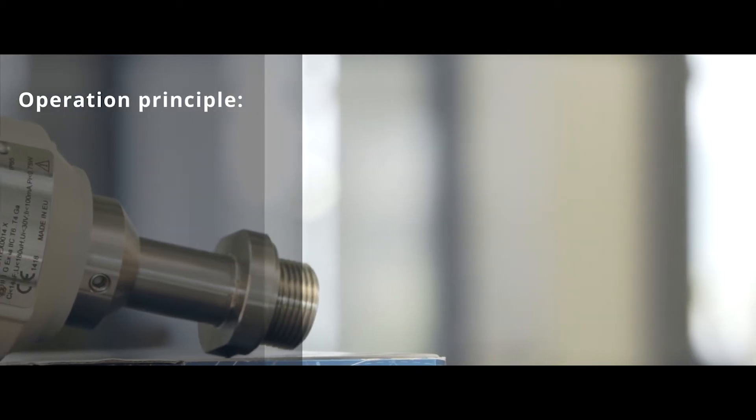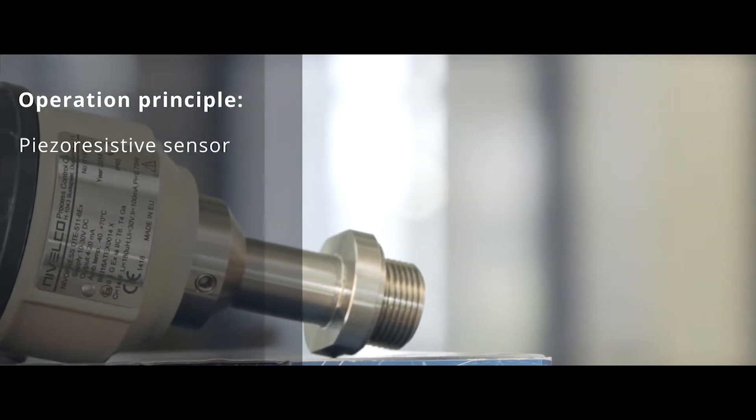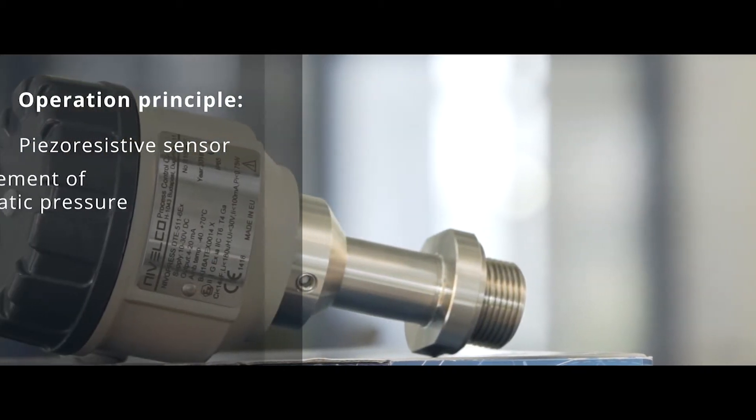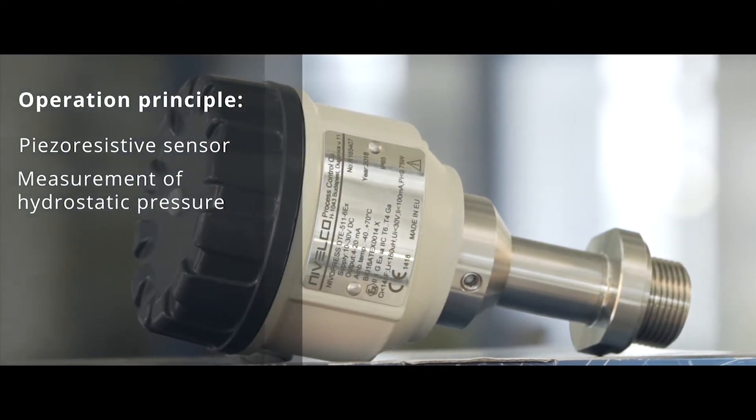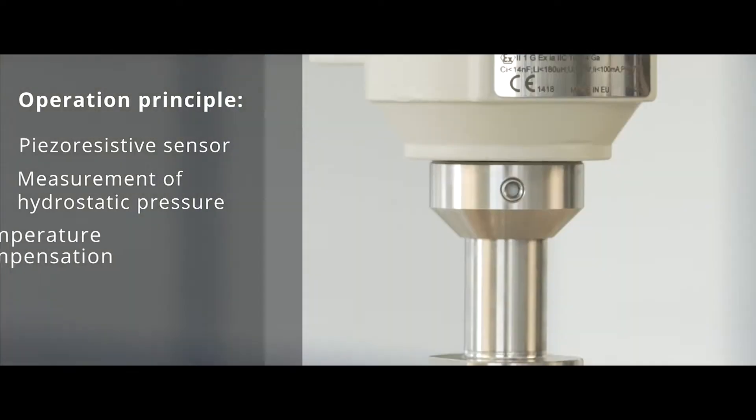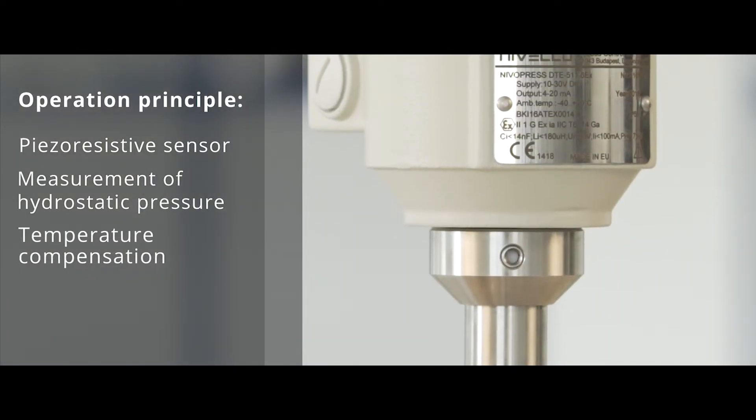Operation Principle: The piezo-resistive sensor of Nivelco's D, protected by a stainless steel flush diaphragm, measures the hydrostatic pressure and compares that with the actual atmospheric pressure. The measured value may be temperature compensated.